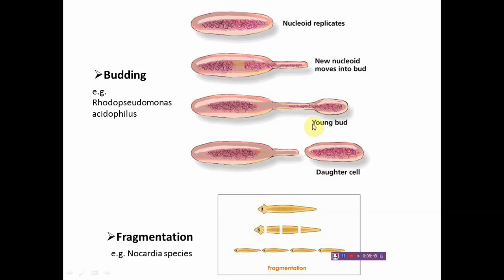Sometimes the bud gets detached and exists as a new microorganism. Cells like Rhodopseudomonas acidophilus are capable of budding. In fragmentation, the name itself indicates the mechanism: cells form long filaments — either coccoid filaments or cellular filaments — which break at multiple points, forming separate segments. Each segment grows into a new microorganism.